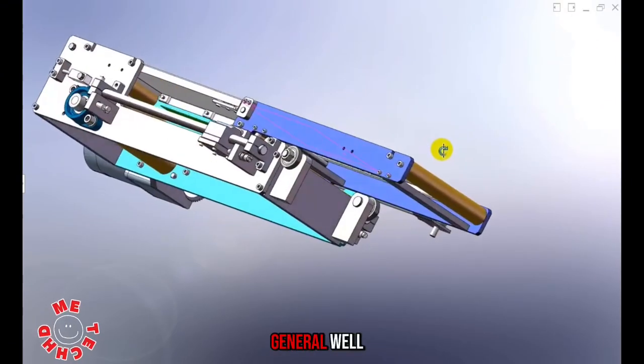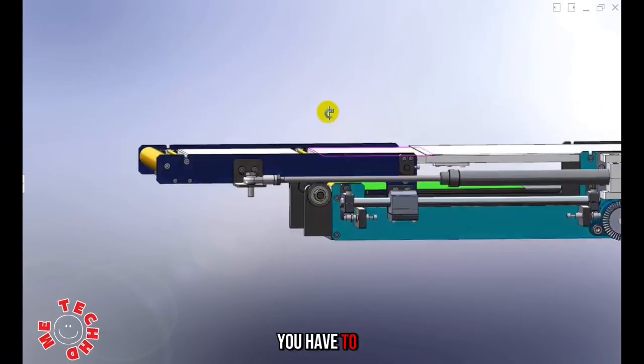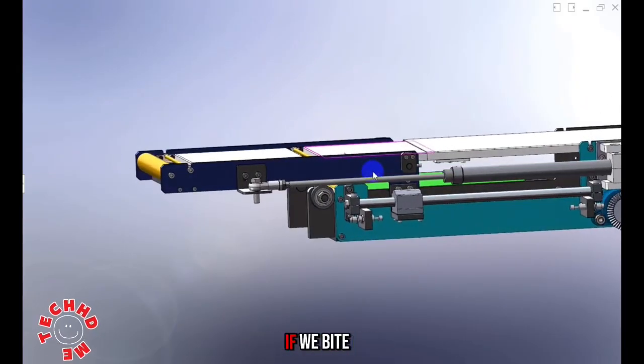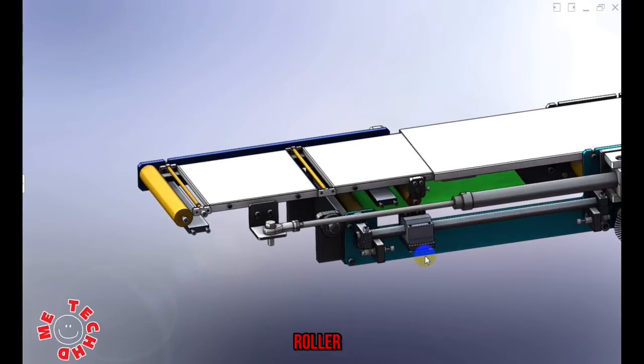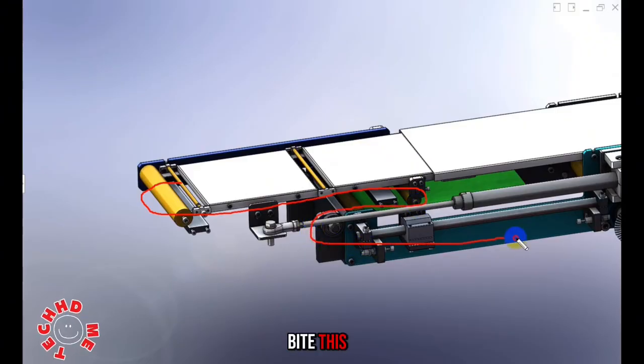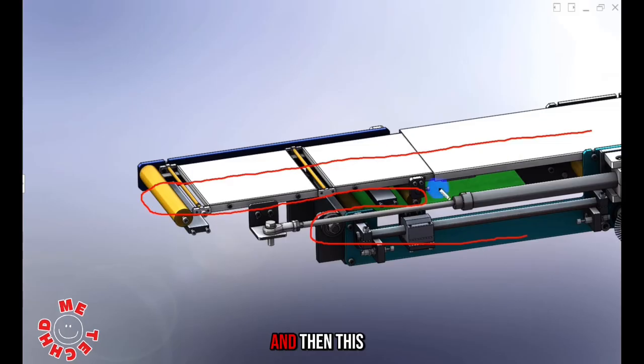You have to understand the rope bite problem. We bite this roller through this mechanism. This roller provides front and back push and pull. Pull it back to achieve contraction, and push it forward to expand. This is the belt.